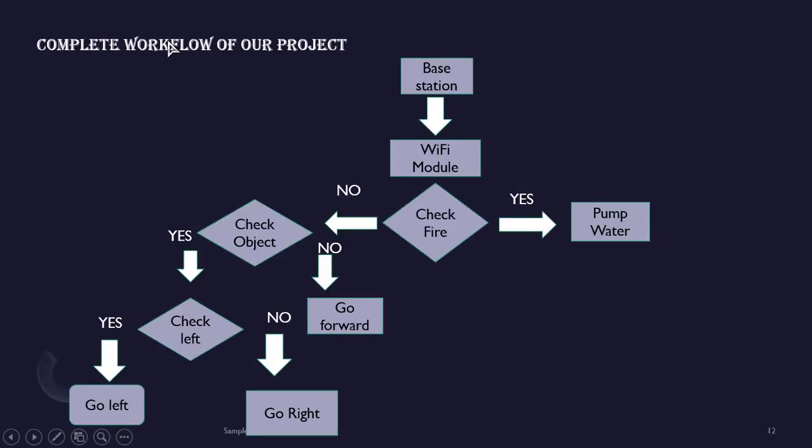Here is the complete workflow of our project. When a fire is detected, the base station will send a signal to actuate the car. The car will start immediately and looking for fire. If fire is not detected, it will start checking for object. It will check in both left and right direction and go to the direction where object is the farthest. While moving this way, if the car detects any fire, it will immediately stop and start spraying water on top of it.